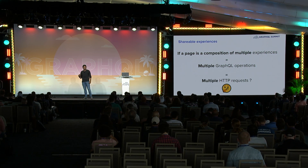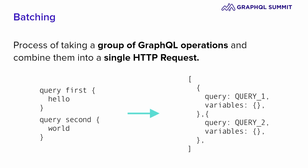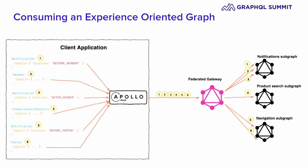If a page is a composition of multiple experiences, that means we'll have multiple GraphQL operations. Would that mean we'd have to send multiple requests to the server? Not really — this is where batching comes into the picture. Batching is the process of taking a group of GraphQL operations and combining them into a single HTTP request. With the Apollo client, a client application composed of six components — notification, header, notification, product search results, another notification, and the footer — will expose its operations to Apollo client, which grabs all those operations and sends one single request to the federated gateway.